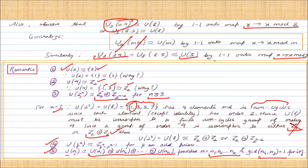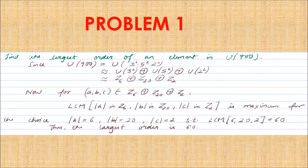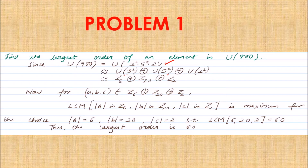Problem 1: Find the largest order of an element in U(900). U(900) is the group of units inside Z900. Factorizing: 900 = 3² × 5² × 2². Using the remarks, U(900) ≅ U(9) × U(25) × U(4). Then U9 ≅ Z6, U25 ≅ Z20, and U4 ≅ Z2, so U(900) ≅ Z6 × Z20 × Z2.